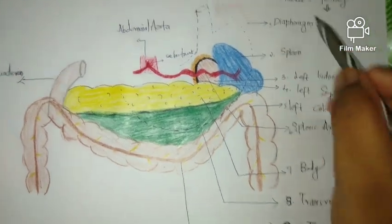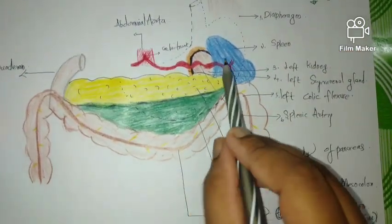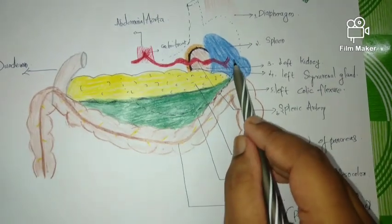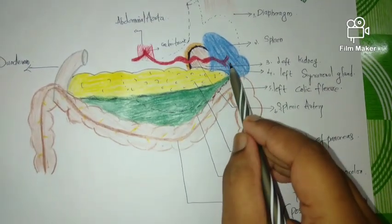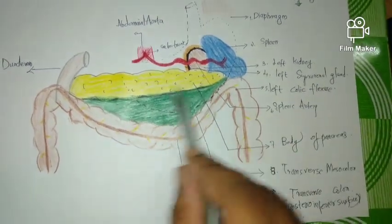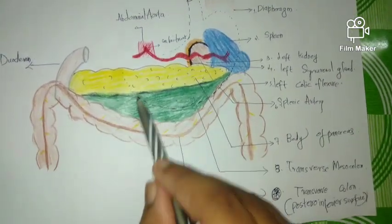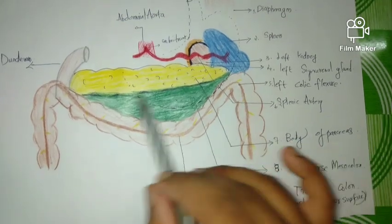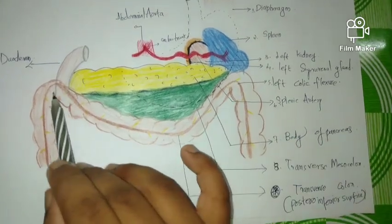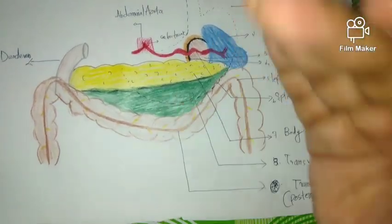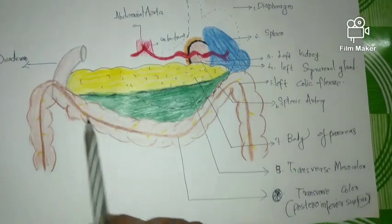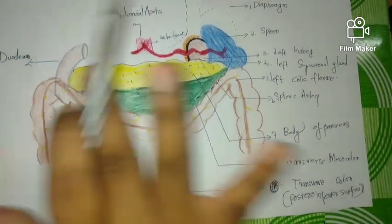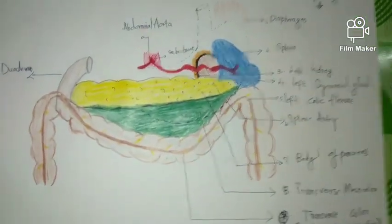To summarize, the structures forming the stomach bed are: the diaphragm, spleen, left kidney, suprarenal gland, splenic artery that supplies the spleen, body of the pancreas, transverse mesocolon, and the transverse colon which is represented on the posterior inferior part. These are the structures that form the stomach bed. Thank you.